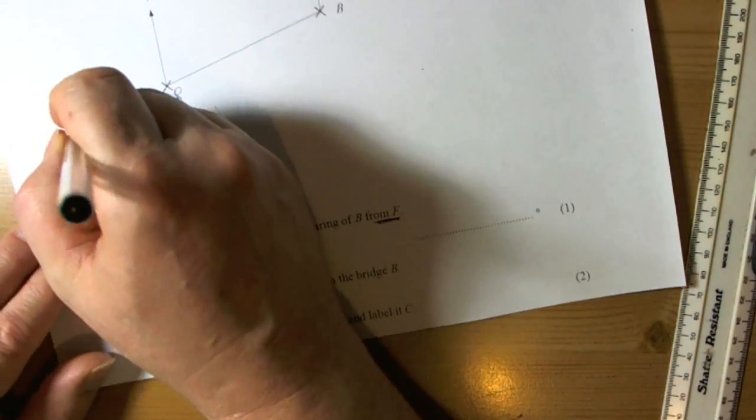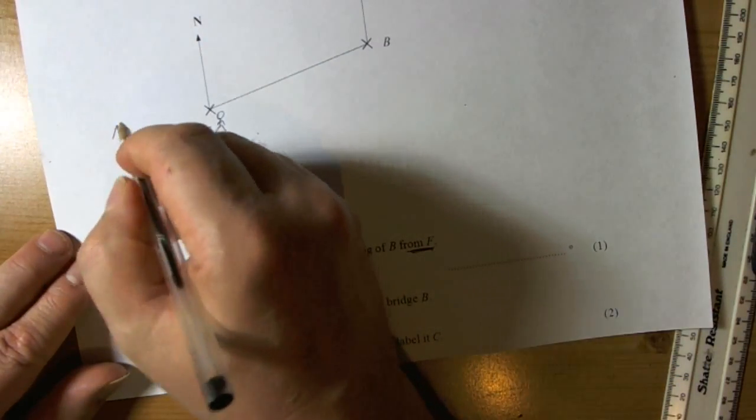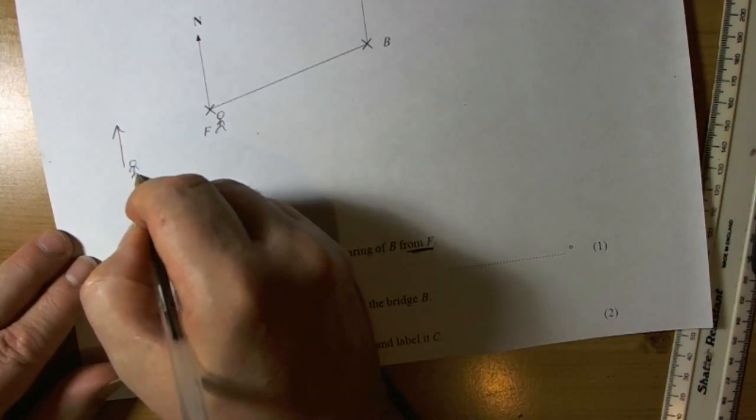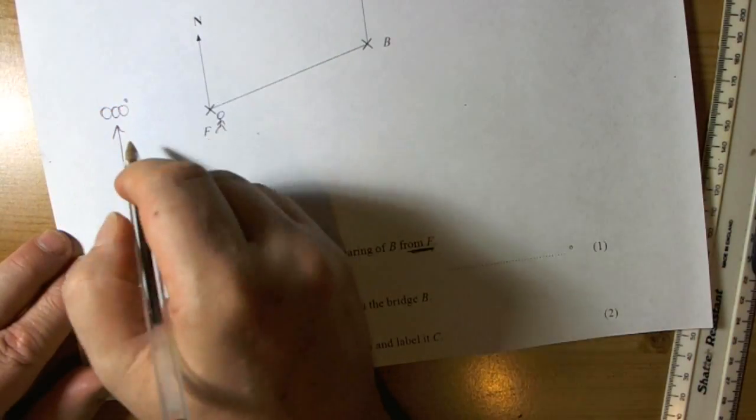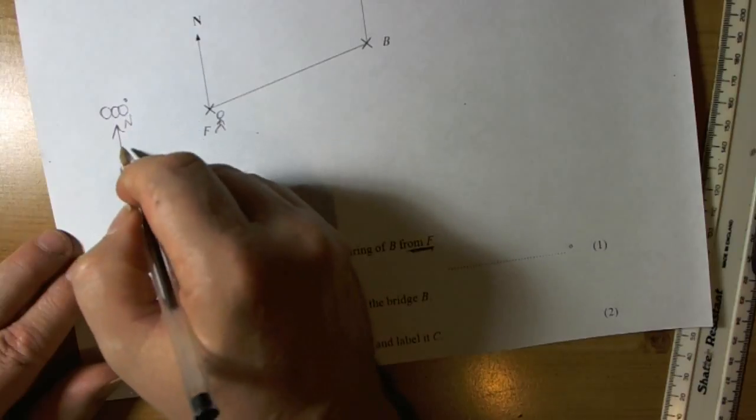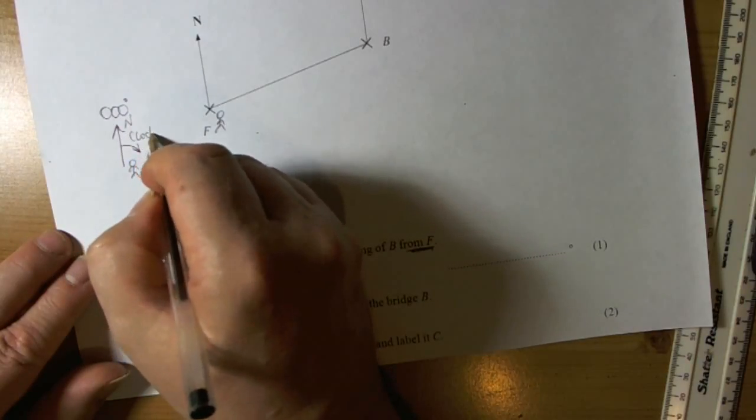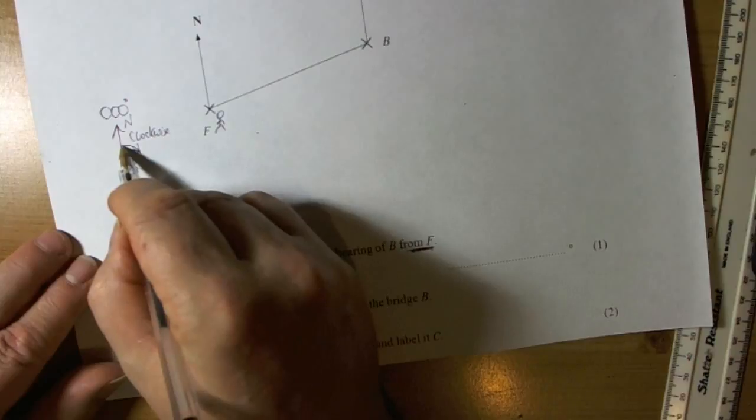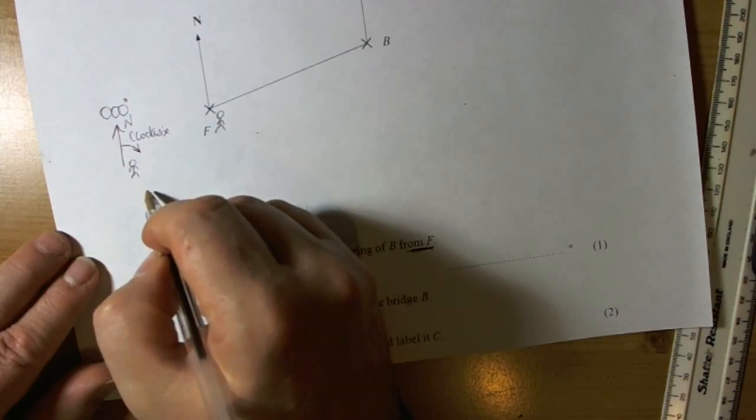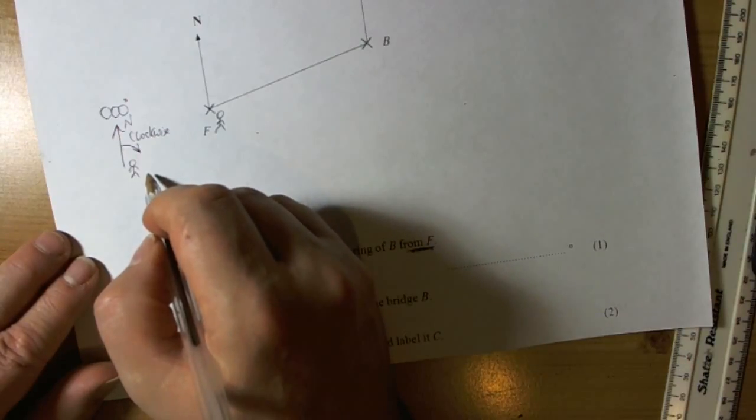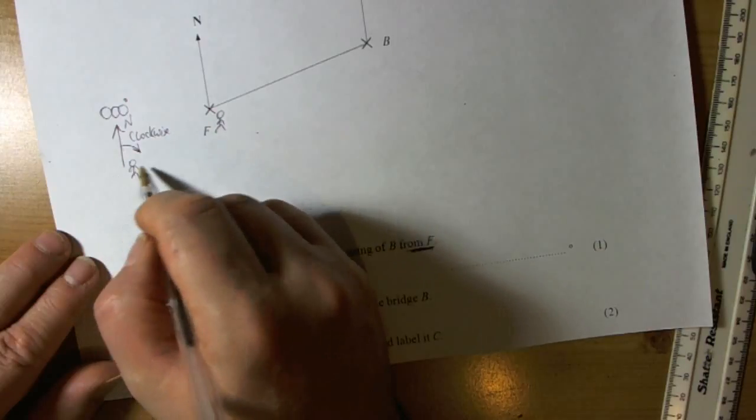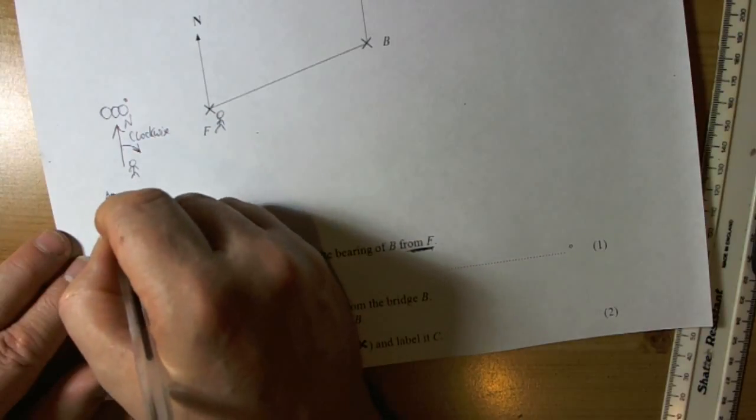Now bearings, the key thing about bearings is that we need to remember that you're always stood facing north. North is always 000, and you're turning in a clockwise direction. However many degrees you turn is your bearing. If it's less than three digits though, then you must put a zero in the front to make it a proper bearing. So all bearings have three digits.